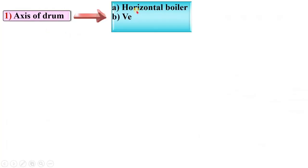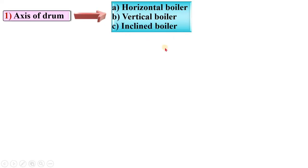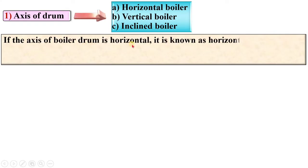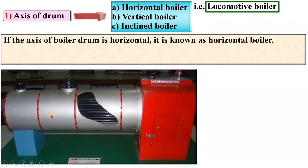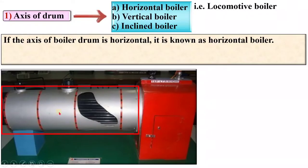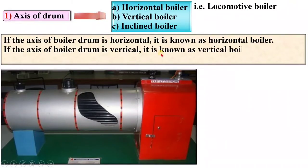First, according to the axis of drum, boilers are classified as horizontal, vertical, and inclined boilers. If the axis of the boiler drum is horizontal, it is known as a horizontal boiler. It depends on the position of the axis of the boiler drum. The example is the locomotive boiler, and here you can see the axis of the boiler drum is in a horizontal position.